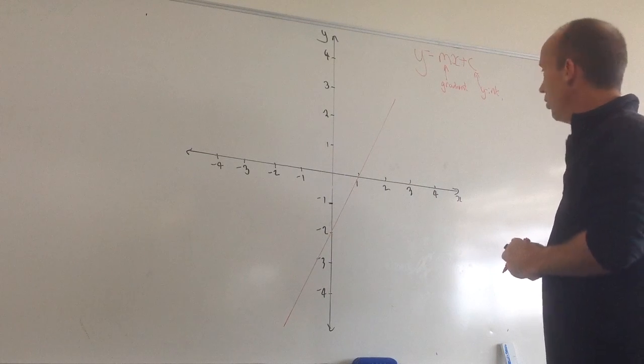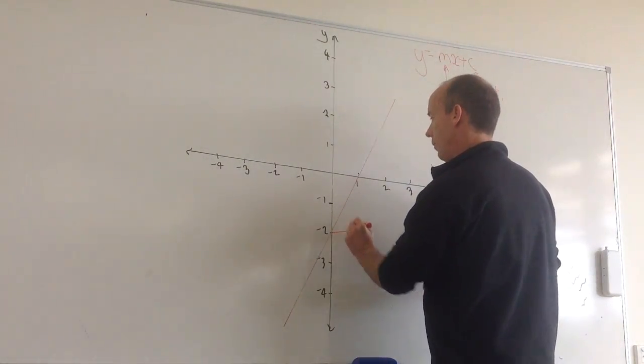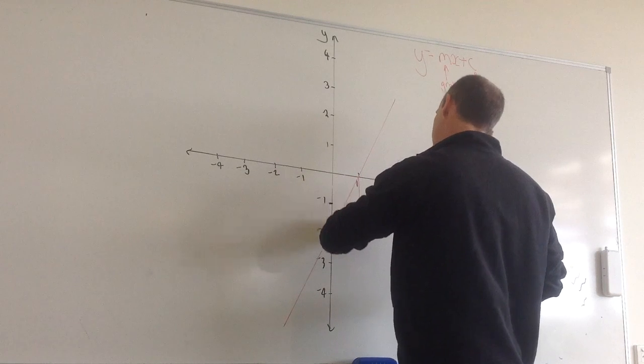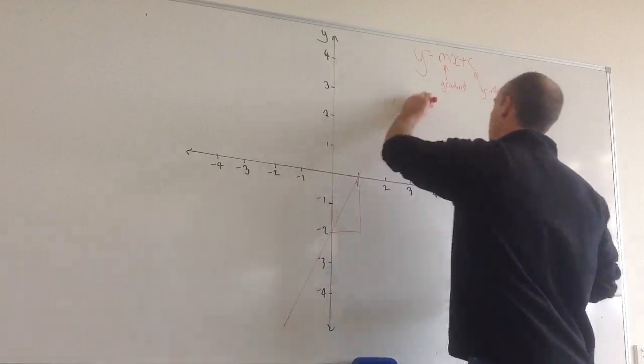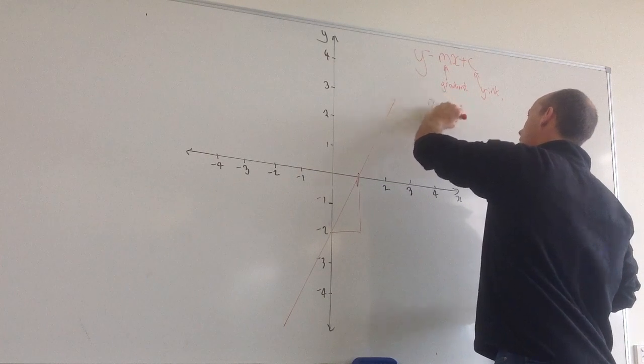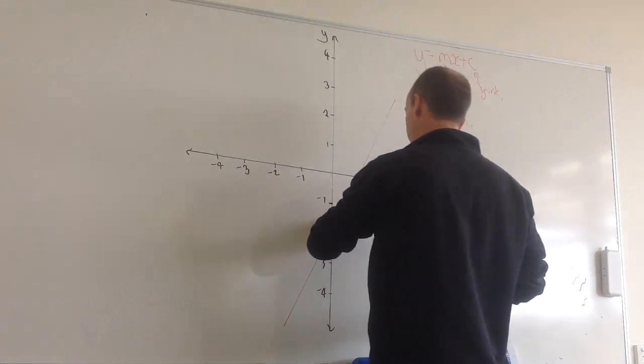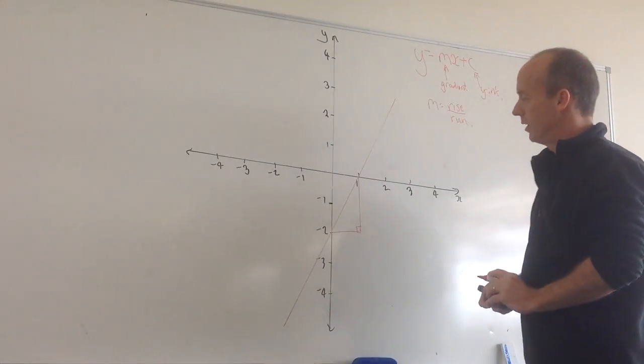So to work out my gradient, what I can do is remember that the gradient is equal to the rise over the run. So m is equal to my rise divided by my run. So if I draw a triangle somewhere, I can work out what my rise and my run is.